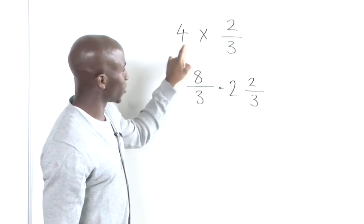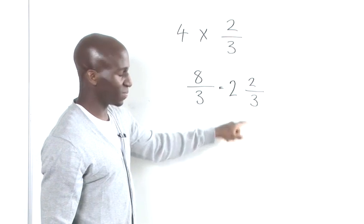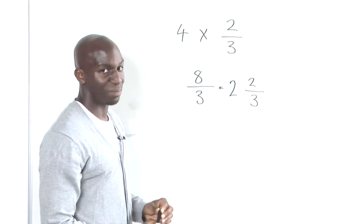So 4 times 2 thirds equals 2 and 2 thirds. And that's how to multiply whole numbers by fractions.